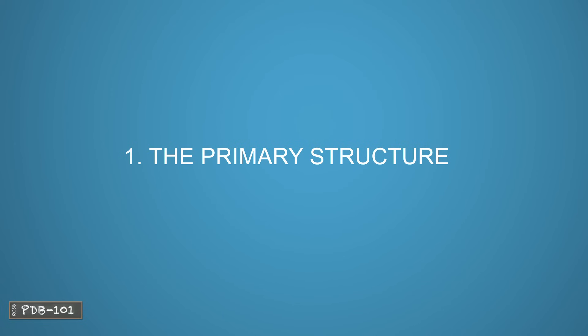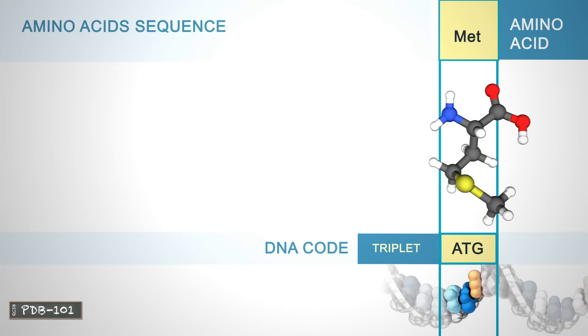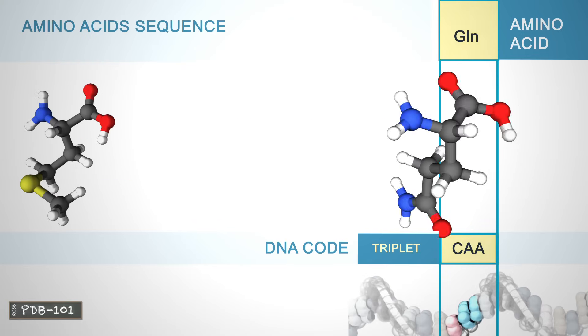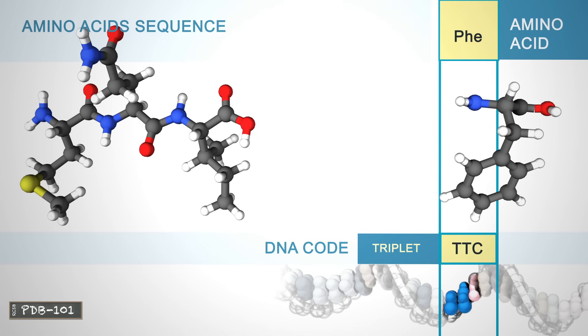The primary structure of a protein is the linear sequence of amino acids as encoded by DNA.